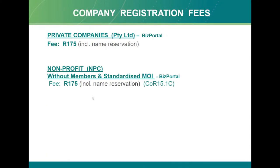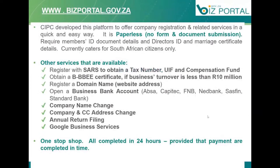Company registration costs 125 rand and name reservation costs 50 rand. Non-profit companies without members with standardised MOI also cost 175 rand total - 50 rand for the name and 125 rand for registration. Private companies and non-profit companies can be registered using Biz Portal and you don't need to submit any documents.